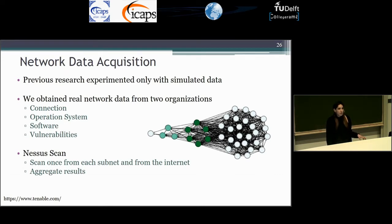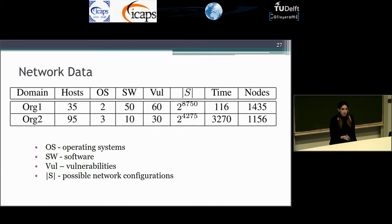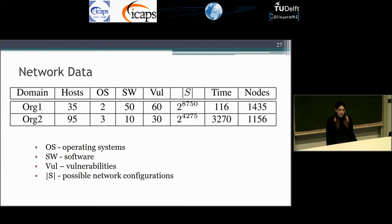Previously, work done in the field conducted experiments over simulated data. We wanted to conduct experiments over real data. We managed to obtain data from two organizations — the machines, connections between machines, operating system, softwares, and vulnerabilities in each machine. We did so by scanning with NMAP scans each subnet within the network and from the internet to each subnet, and we aggregated the results into a single model. We managed to solve those networks; the two organizations consist of different amounts of hosts, operating systems, softwares, and vulnerabilities. The state space search is quite huge, however we managed to solve it in a reasonable time and produced quite large plans that attack the networks.